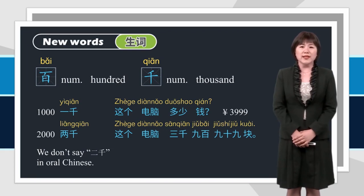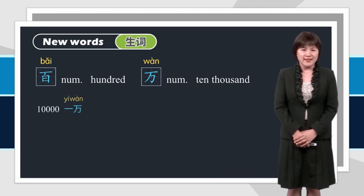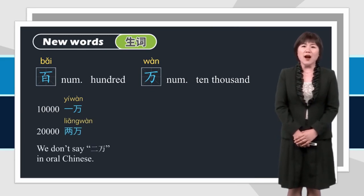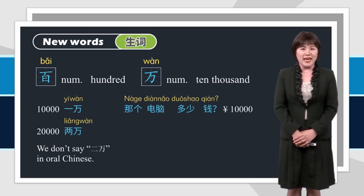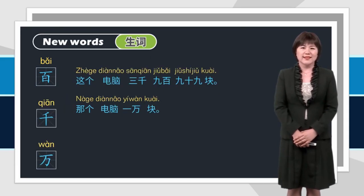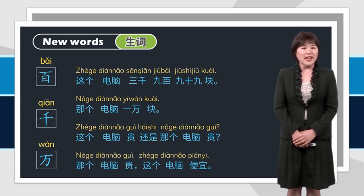And do you know how to say 10,000 in Chinese? 万。跟我读：万。一万，两万。We also don't say 二万 in oral Chinese. 那个电脑多少钱？那个电脑一万块。这个电脑贵，还是那个电脑贵？那个电脑贵，这个电脑便宜。